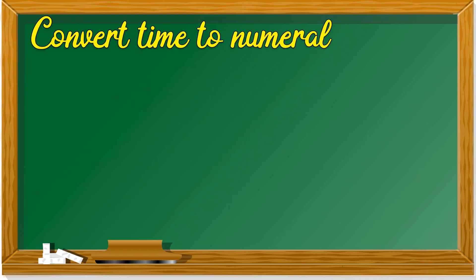Now we look at converting time to numerals. This means the time is given to you in words, and you have to change it to numbers. For example, 'two ten' — you write 2 for the hour and 10 for the minute. Easy, right?